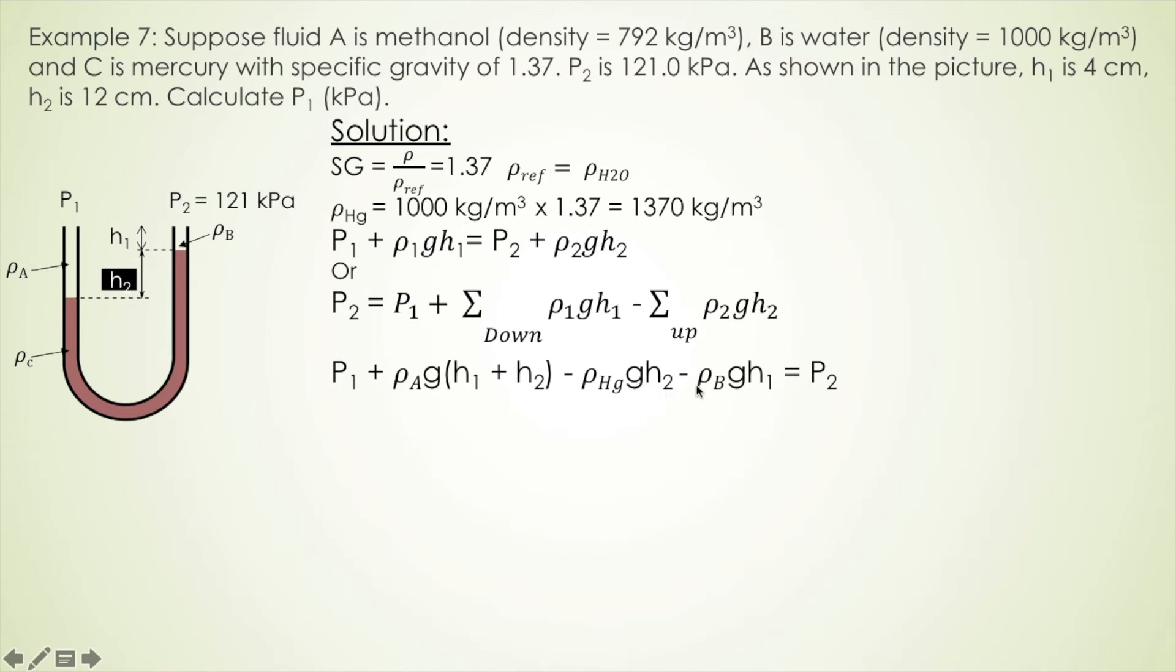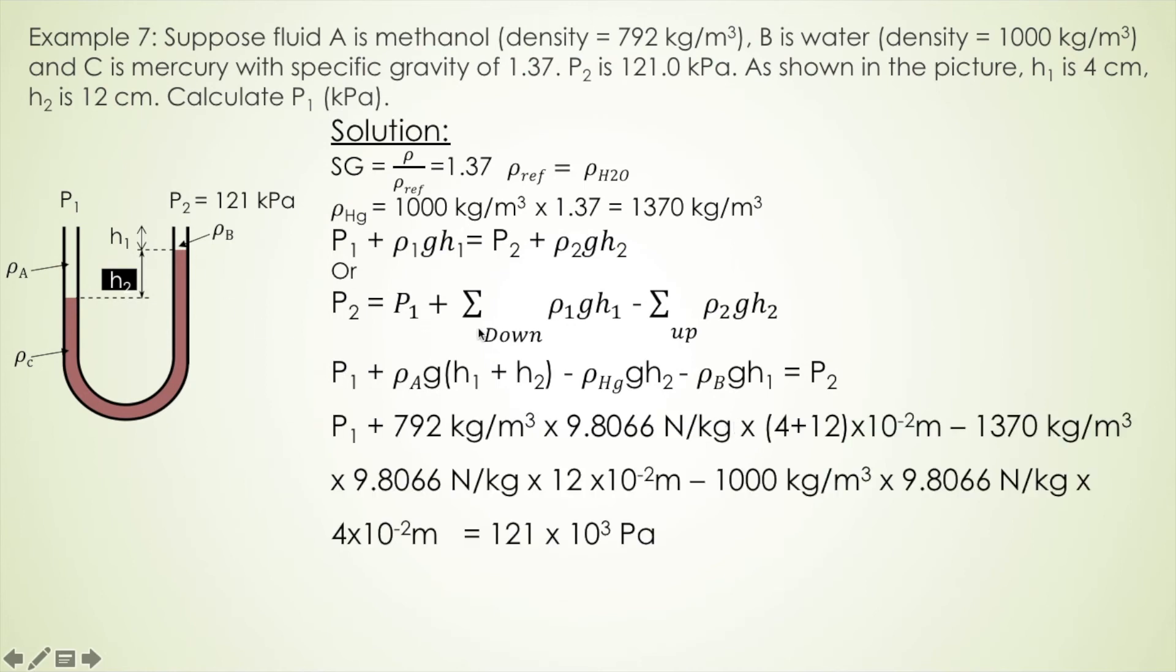Minus, because this one goes up, so we use minus sign. Density of B is water times gravity times the deflection is H1, then we get P2. And substitute this equation with the number given. Then we can calculate the pressure of P1. We get approximately 122 kilopascal.